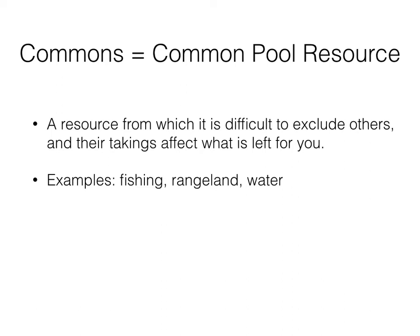Similarly for rangeland, you can only graze so many cattle per area. If other people are grazing there, it decreases the fodder available for you. When it is difficult to exclude them, this becomes a common pool resource. Same goes for water — there's only so much water in the river. It's difficult to exclude other people from taking water, especially if they're upstream of you, and how much they take can affect how much water is left for you.